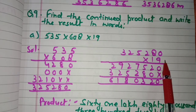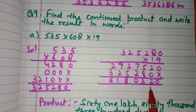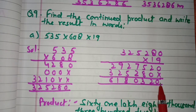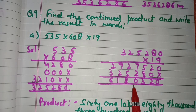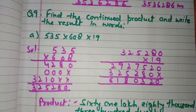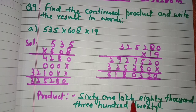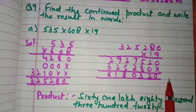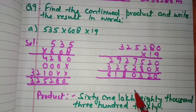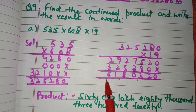Then we multiply 3,25,280 by the third number 19 and get 61,80,320. This is the continued product of the three numbers. To write 61,80,320 in words, we place commas starting from the ones place — before three digits for the units period, then before two digits for the thousands and lakhs periods.